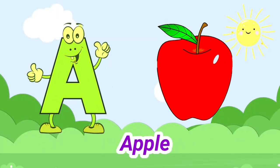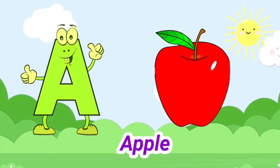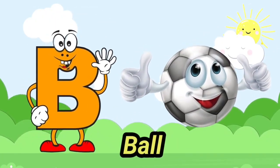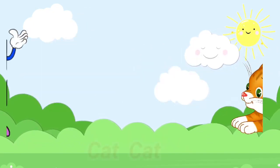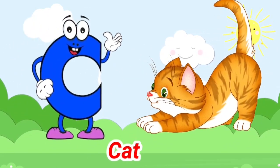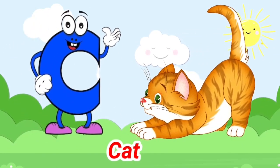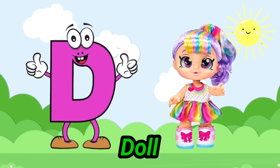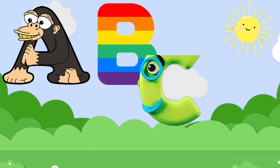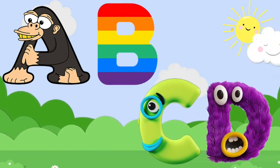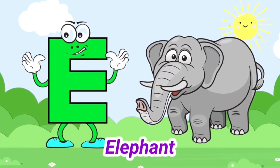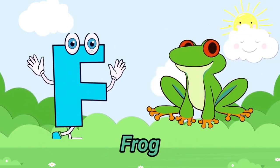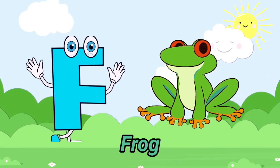A is for apple, a-a-apple. B is for ball, b-b-ball. C is for cat, c-c-cat. D is for doll, d-d-doll. E is for elephant, e-e-elephant. F is for frog, f-f-frog.